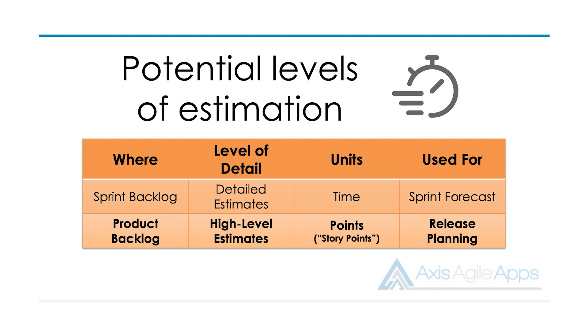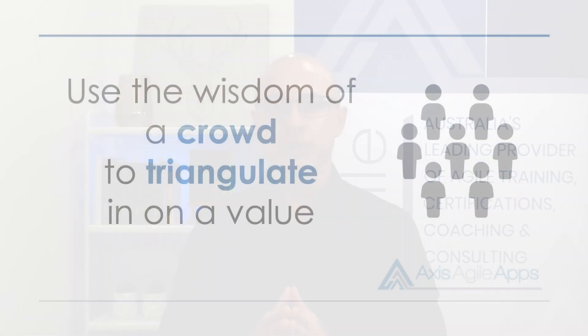A Scrum team will apply story points to product backlog items to determine what they're going to achieve within a release, or when those releases will be done by. To apply those story points, they will typically use what is called planning poker. Planning poker wasn't created by Scrum — it was actually created way back in about 2002 by a gentleman named James Grenning.